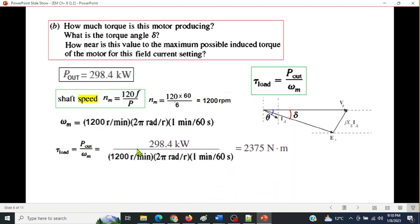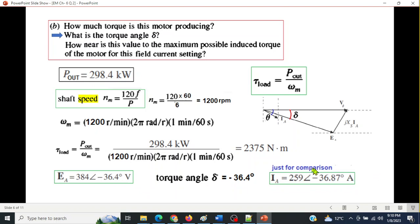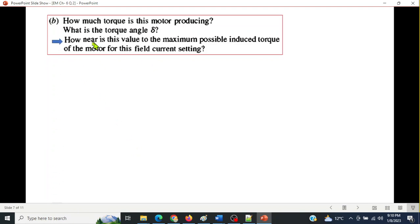Now putting in the formula, we calculate T load. So it is 2375 Newton meter. So this is the load torque. And now we need to find the torque angle, which is actually this angle, the angle of EA. We had already calculated the angle of EA, which was minus 36.4 degrees. So this is the torque angle. So the torque angle delta is minus 36.4 as well. Just for comparison, I am noting this. The current angle is minus 36.87 and Ea angle is minus 36.4. So slightly going toward the positive side.